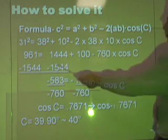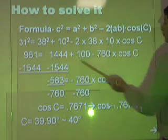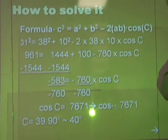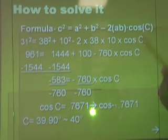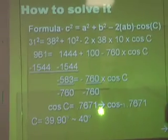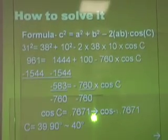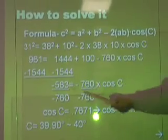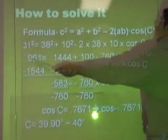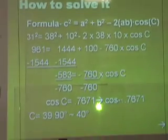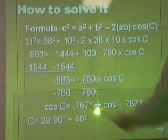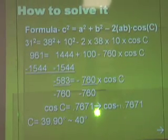So then the next step is subtract. You added 100 to 1,444, and that gave me 1,544. So now I have to subtract 1,544 on both sides. So I subtracted it from 961, and that gave me negative 583.